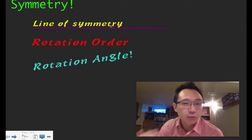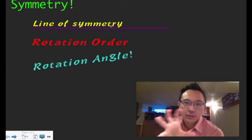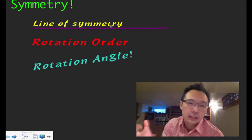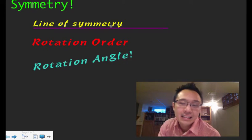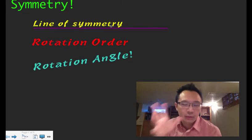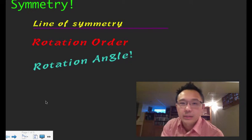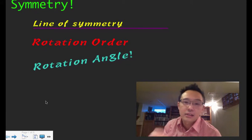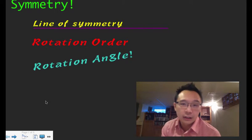This video is all about symmetry. We're going to learn three different things: how to find a line of symmetry of an object, how to find the rotation order, and how to determine the rotation angle. Symmetry is really cool because a lot of the things we see — cool designs, relaxing designs — they're all symmetrical.